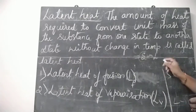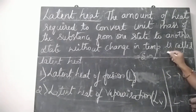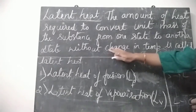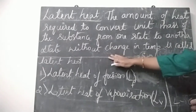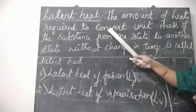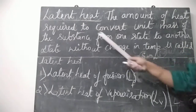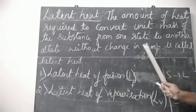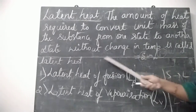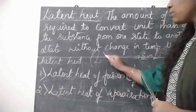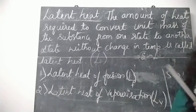To convert a solid to liquid, the temperature should not change. So the amount of heat required to convert unit mass of the substance from one state to another state without change in temperature is called latent heat, and it is denoted by capital L.